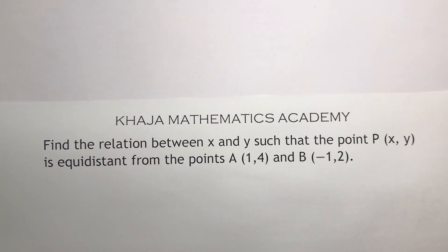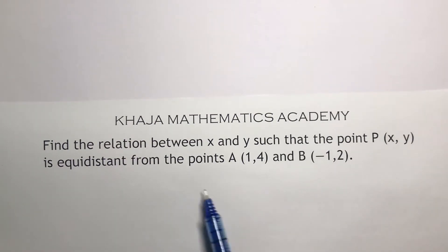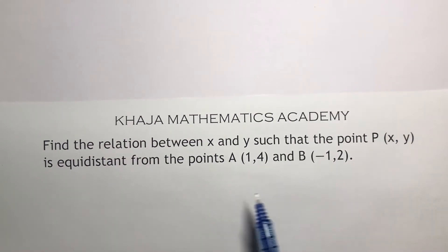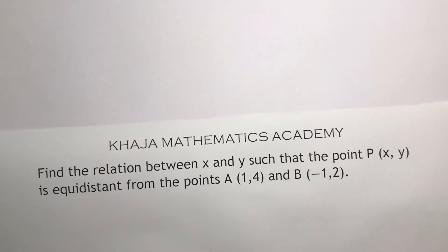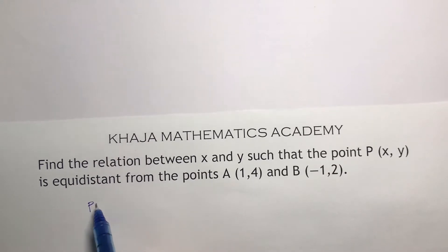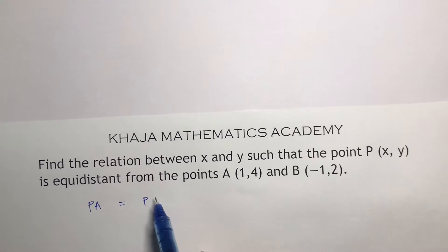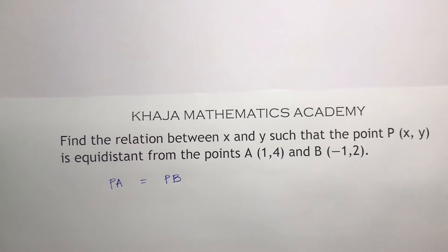Find the relationship between X and Y such that point P is equidistant from A and B. Here they gave P is equidistant from A and B, meaning PA distance equals PB distance.